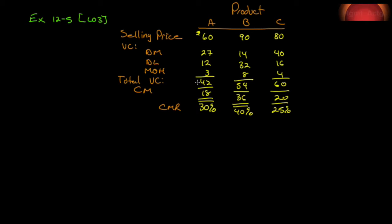Exercise 12.5: utilization of a constrained resource, learning objective 3. The following are the selling price, variable costs, and contribution margin for one unit each of Banner Company's three products A, B, and C — replicated on screen. Due to a strike in a competitor's plant, demand for the company's products far exceeds its capacity to produce.